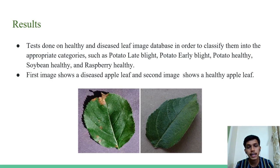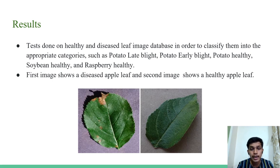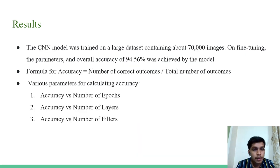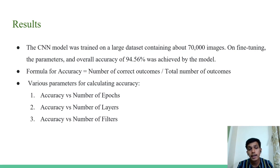Results. The tests are done on a healthy and diseased leaf database to classify them into appropriate categories such as potato late blight, potato early blight, potato healthy, soybean healthy, raspberry healthy, and 38 different types in total. The first image shows a diseased apple leaf and the second shows a healthy apple leaf — visible to the naked eye, but our system also identifies them correctly using CNN. The CNN model was trained on a large dataset containing about 70,000 images. On fine-tuning the parameters, an overall accuracy of 94.56% was achieved. To fine-tune the parameters, we plotted different graphs of accuracy versus number of epochs, accuracy versus number of layers, and accuracy versus number of filters.